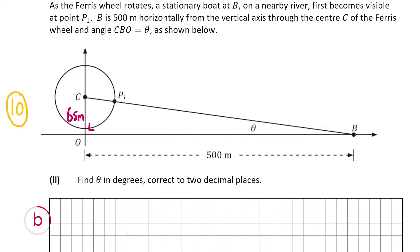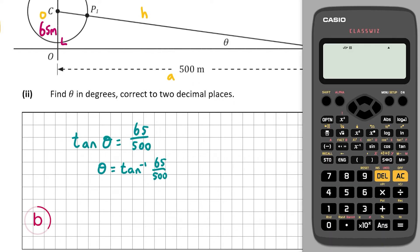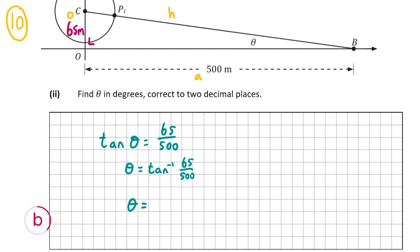The hypotenuse is across from the 90 degrees, the opposite is across from the angle theta, and the adjacent is 500 meters. Since we have the opposite (65) and adjacent (500), we use tan: tan(θ) = 65/500. So theta = tan⁻¹(65/500). Using the calculator in degrees mode, that gives 7.406912128, which correct to two decimal places is 7.41 degrees.